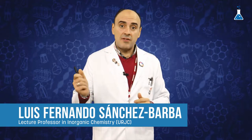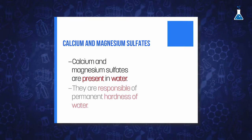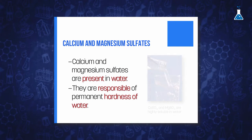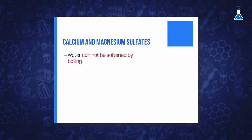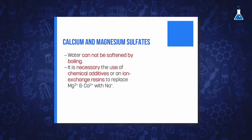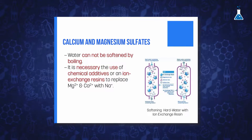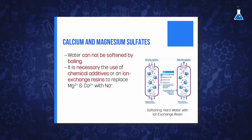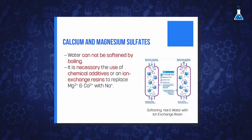Calcium and magnesium sulfates are present in water and they are responsible for what is known as permanent hardness of water. Water cannot be softened by boiling, being necessary the use of chemical additives or by passing it through an ion exchange resin that replaces the Mg2+ and Ca2+ cations with sodium ions.